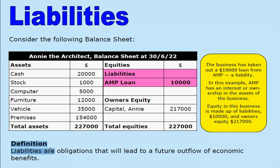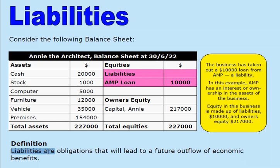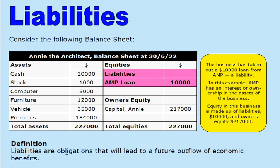Here's a definition of liabilities: Liabilities are obligations that will lead to a future outflow of economic benefits. So it's a future obligation that the business has — in this case, $10,000.